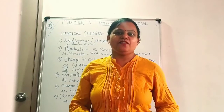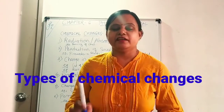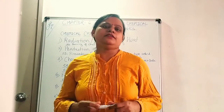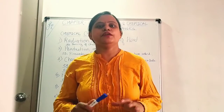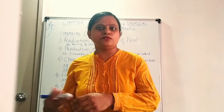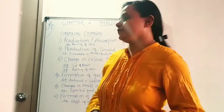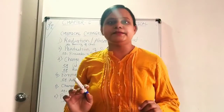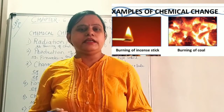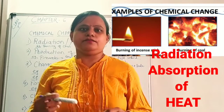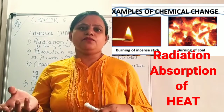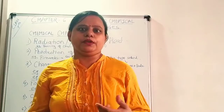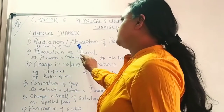The next topic of this chapter is types of changes that happen during a chemical reaction. We will look at the different types of chemical changes. First is the radiation or absorption of heat. Burning of coal or wax will generate heat, or in some reactions heat is absorbed. This is the first type of change.